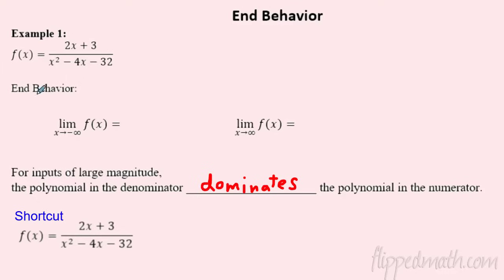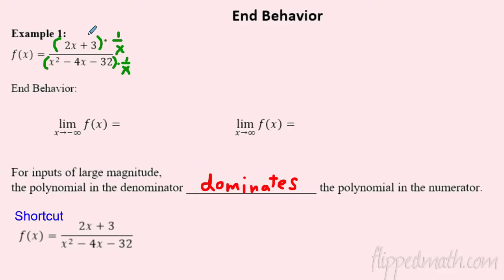To mathematically show this domination, I'm going to divide everything by the highest power of the weaker side. The numerator is weaker — its highest power is 1 — so I divide everybody by x, or x to the first power. You take everybody and multiply by one over x, but to keep fractions equal I do it to the bottom too. So multiply the top by one over x and the bottom by one over x, then distribute.